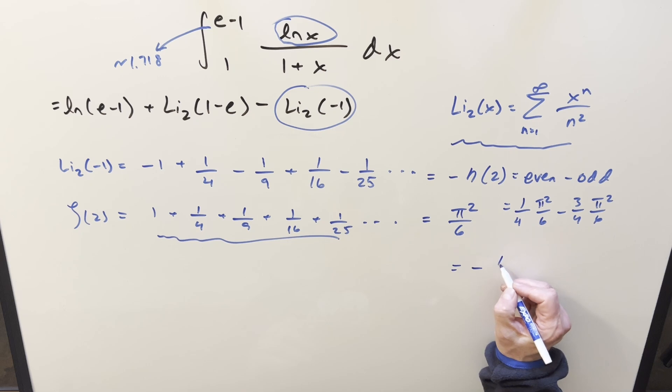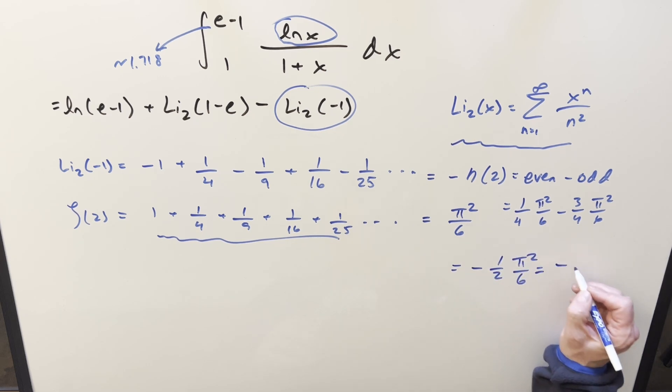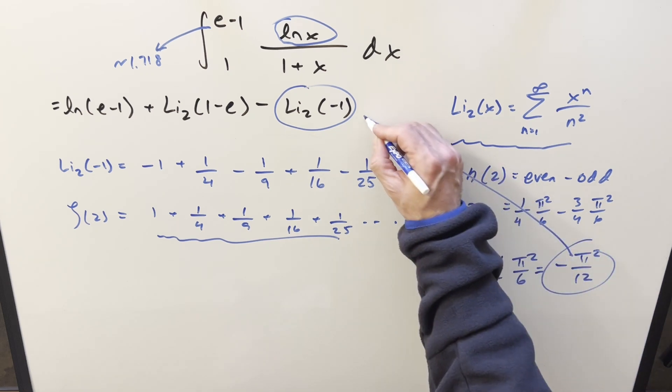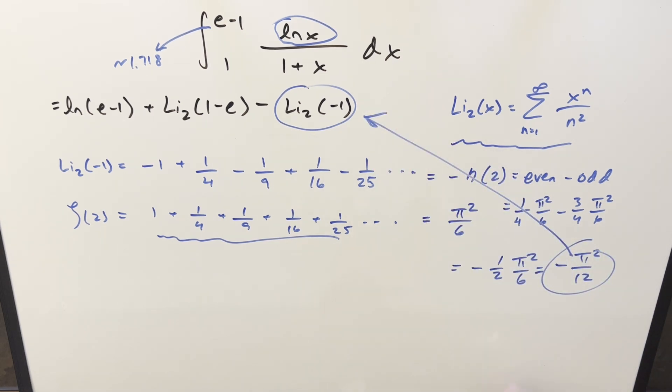So I'll make a little space and finish it. So putting this together, we get minus 1 half pi squared over 6, or just minus pi squared over 12. Take that and we'll plug it back in there. What's going to happen is minus times minus here is plus. So for my final solution on this, we get natural log e minus 1 plus dilogarithm 1 minus e plus pi squared over 12. And that's it.